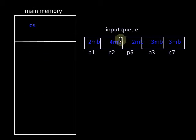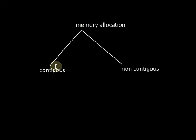This memory allocation is mainly of two types: one is contiguous memory allocation and the other is non-contiguous memory allocation.